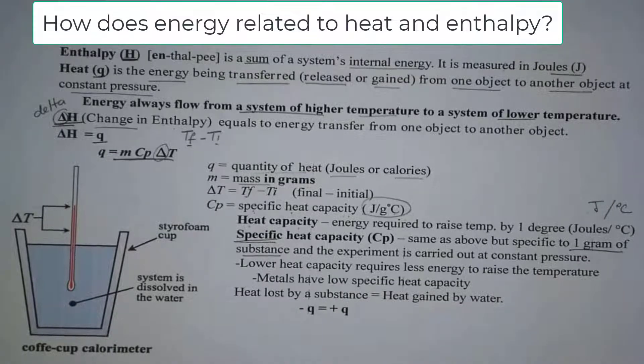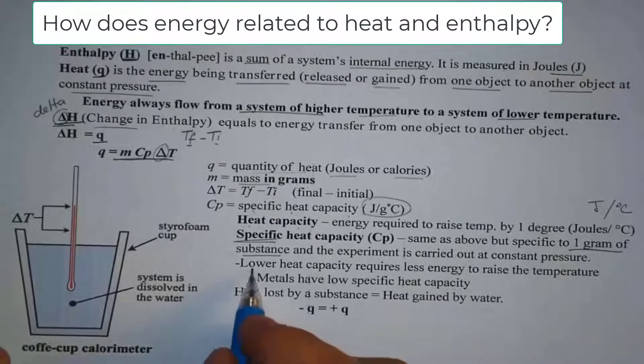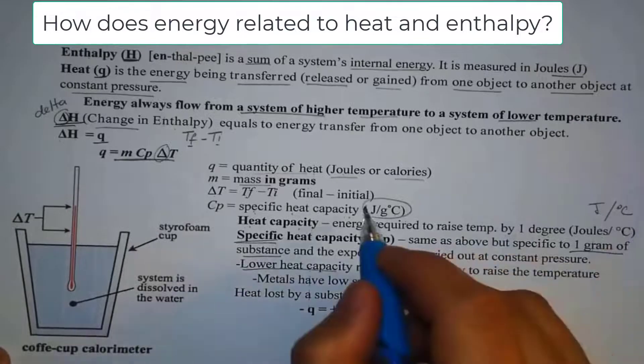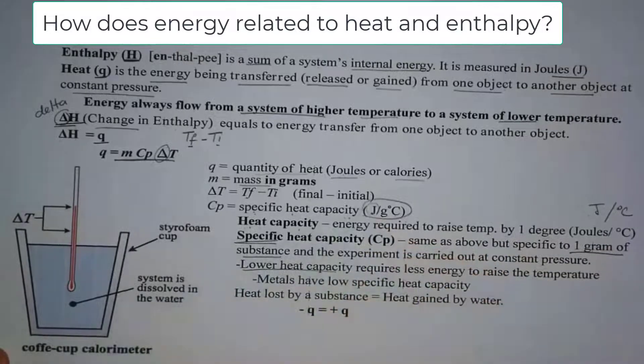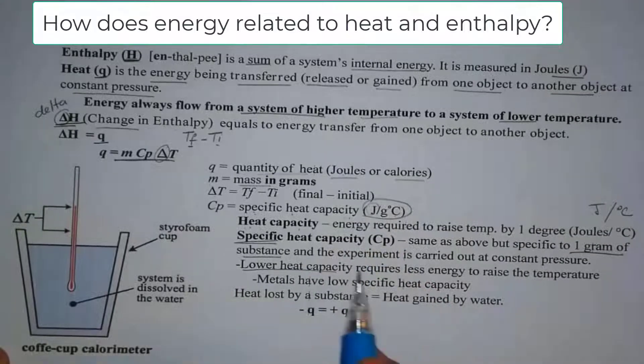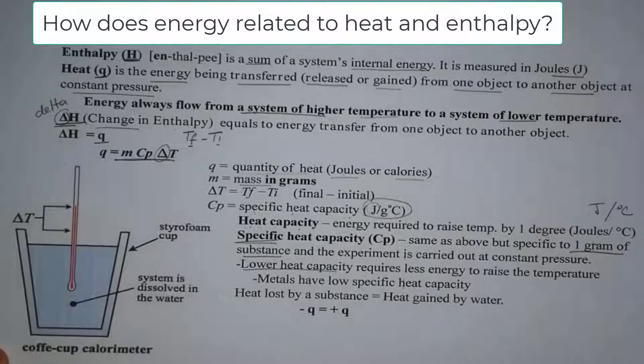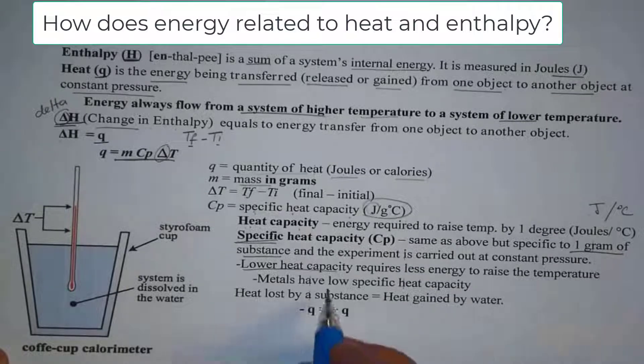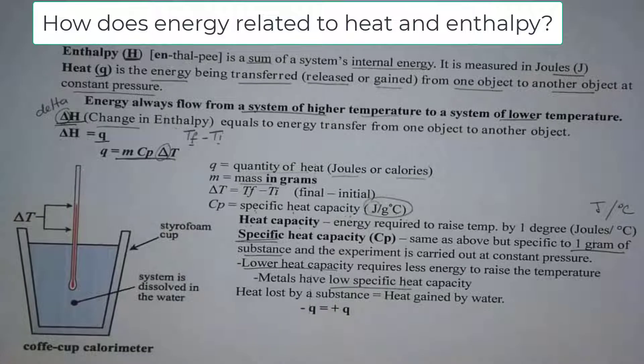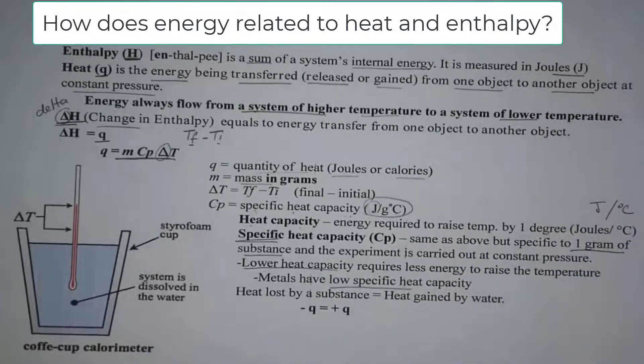Now, if we look at the list of specific heat capacity, what does it tell you? Of course, the one with the lower J right here will require very low energy to change the temperature. So keep that in mind. And the one that has very high specific heat capacity, it would require a lot of energy. For instance, metals have very low specific heat capacity. That's why we use metals in our cookware, so that way it will easily increase the temperature. Isn't that nice? So we can cook faster.